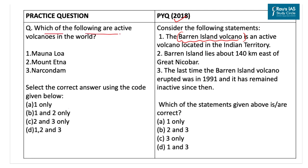The practice question asks: which of the following are active volcanoes in the world? Option 1 is Mauna Loa, which is the largest active volcano located in Hawaii, USA. Option 2 is Mount Etna, which is also an active volcano located in Italy. Option 3 is Narcondam Island, India's easternmost island located in the Andaman Sea — this is presently in a dormant state and not an active volcano, so option 3 is incorrect. As only options 1 and 2 are correct, the answer is option B. The previous year question answer is option A.